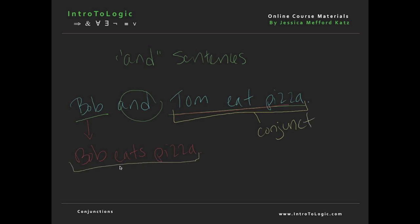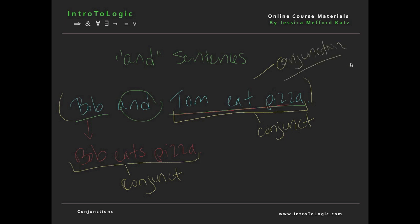So we have the conjunct 'Bob eats pizza' and the conjunct 'Tom eats pizza'. And the whole thing — the sentence 'Bob and Tom eat pizza' — is technically the conjunction. So that's in a nutshell what we call a conjunction.